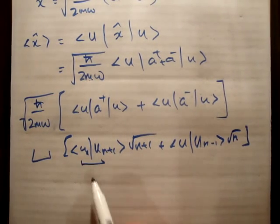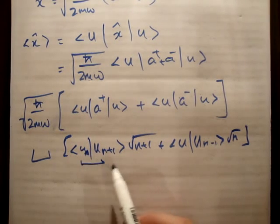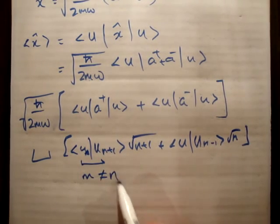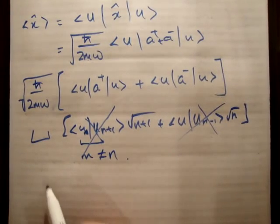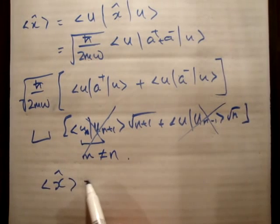But look, these here, that's orthogonal, because u n, let's say m is not equal to n. In this case, n is not equal to n plus 1, that's equal to 0, that's equal to 0. So therefore, the average of position is equal to 0.